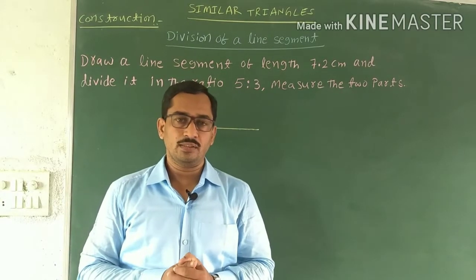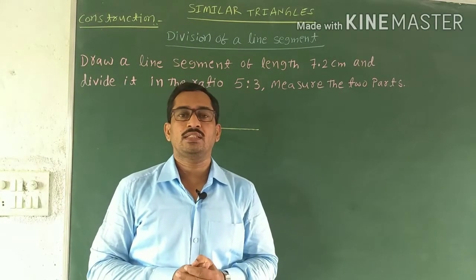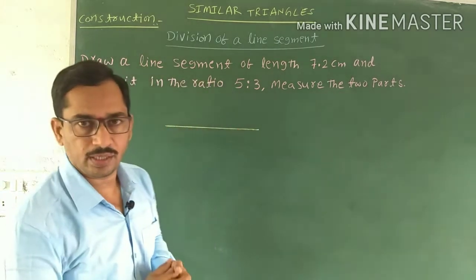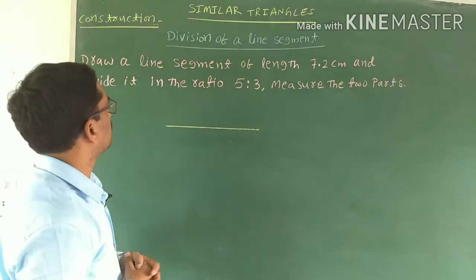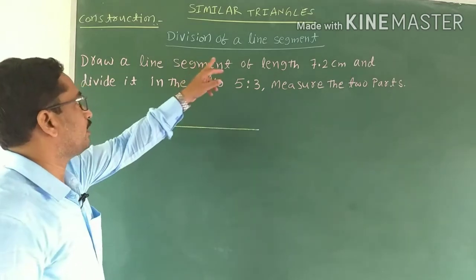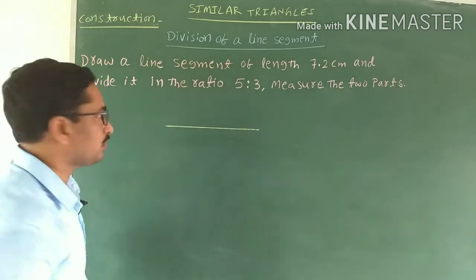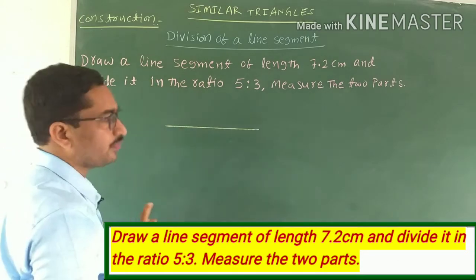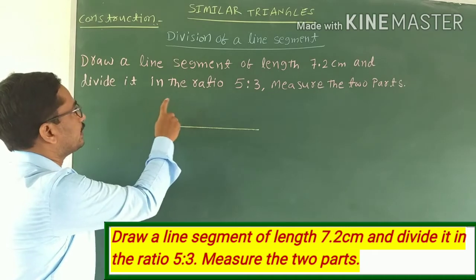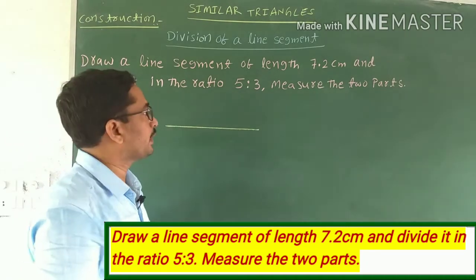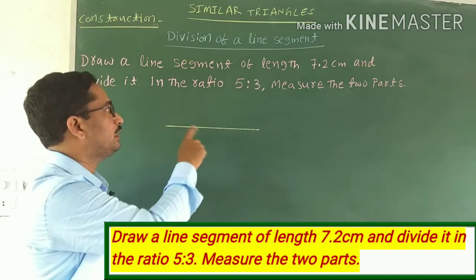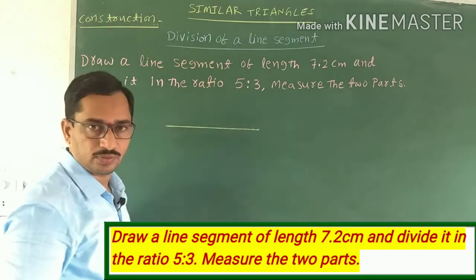In this video we are going to learn a geometrical construction: division of a line segment in a given ratio. This is an important exam topic for two marks. Exercise 8.1, 9th problem — draw a line segment of length 7.2 centimeters and divide it in the ratio 5:3, then measure the two parts. First we have to draw a line segment of 7.2 centimeters, then divide it in the ratio 5:3.